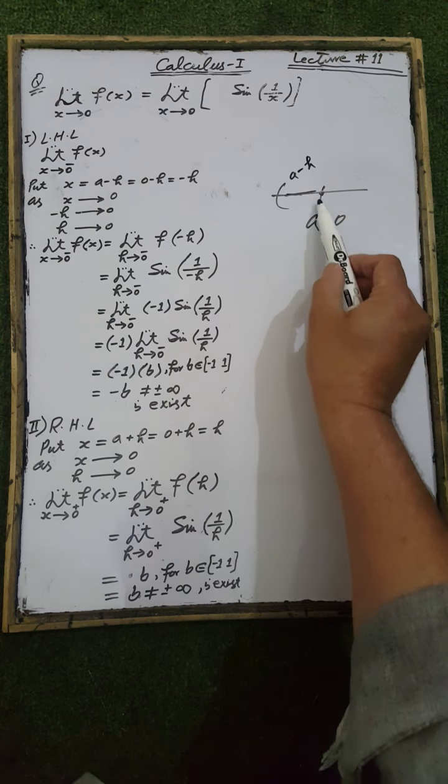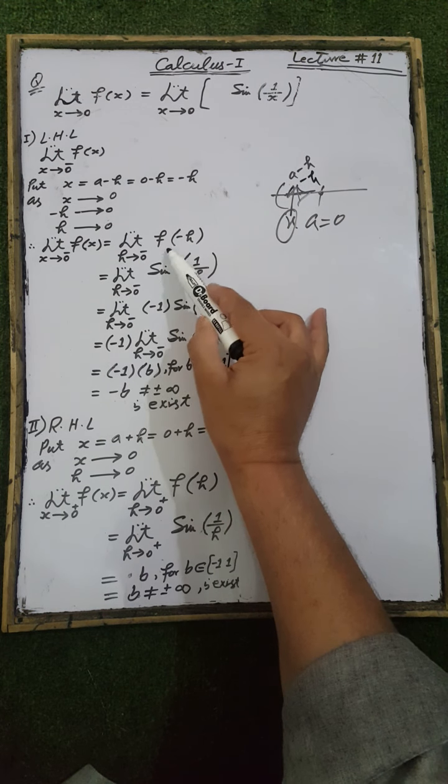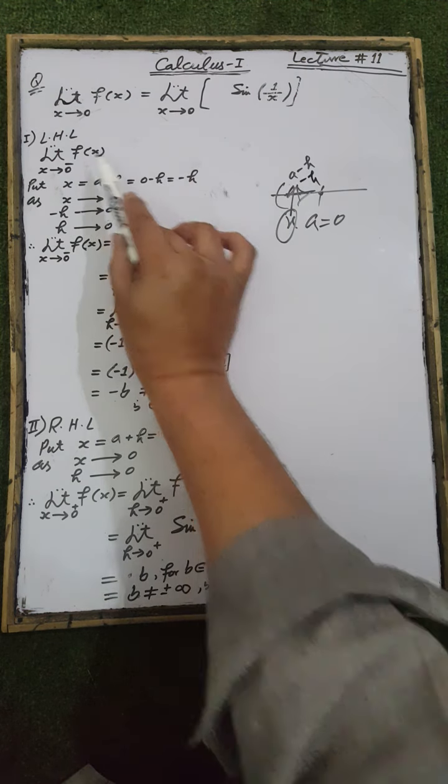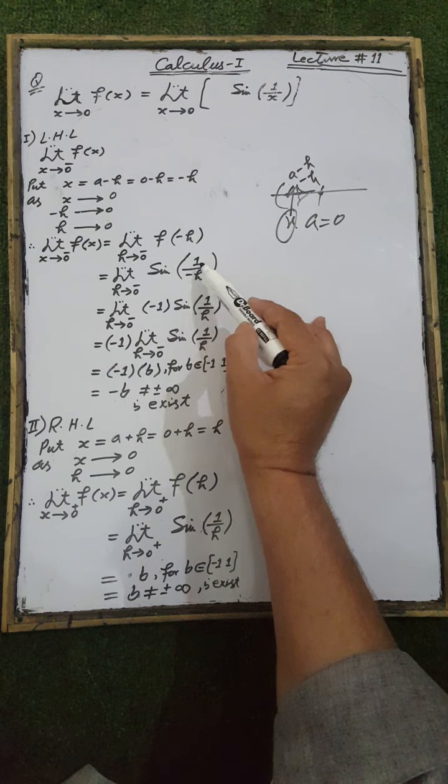Since a = 0, x = 0 minus h = minus h. As x tends to zero, we replace x by minus h, so minus h tends to zero. Therefore, the limit of f(x) as x tends to zero from the left side, where x = minus h, equals the limit of f(minus h) — replacing x by minus h — as h tends to zero from the left side, which equals the limit as h tends to zero of sine of 1 divided by minus h.